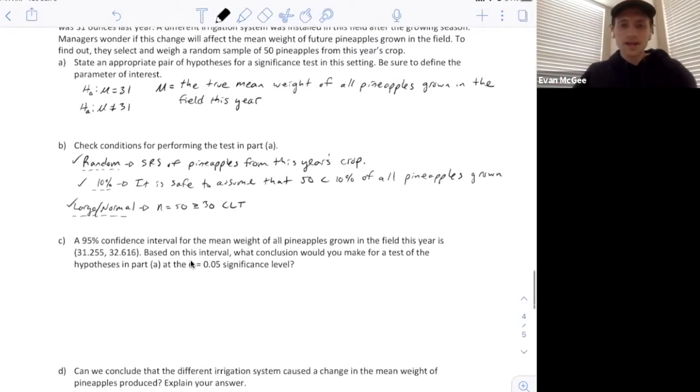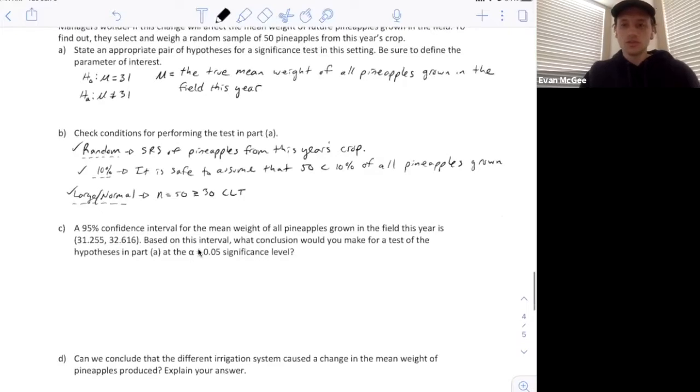A 95% confidence interval for the mean weight of all pineapples grown in the field this year is from 31.255 to 32.66. Based on this interval, what conclusion would you make for the test of the hypotheses in Part A at a 5% significance level?